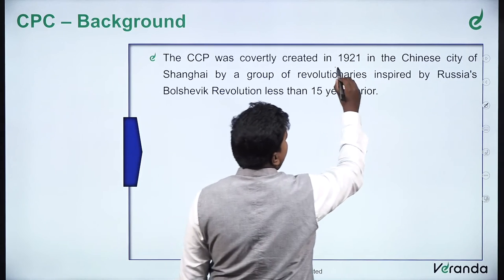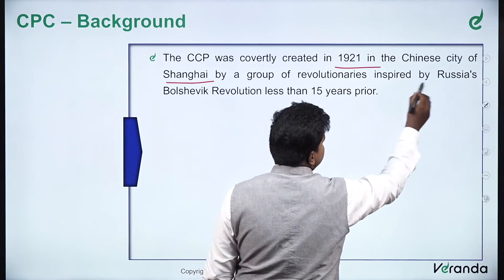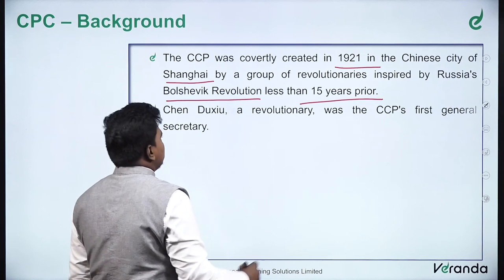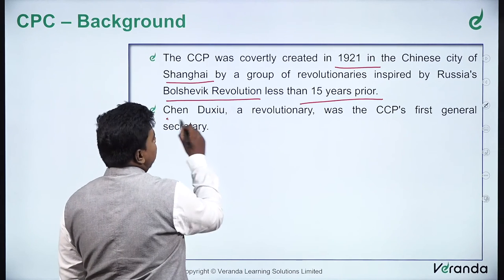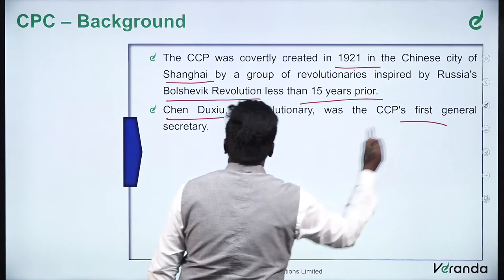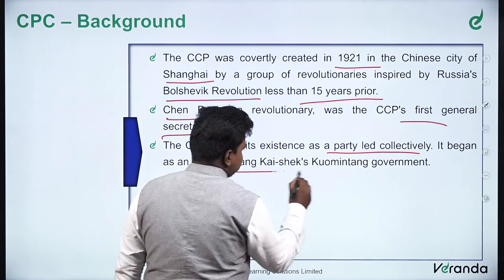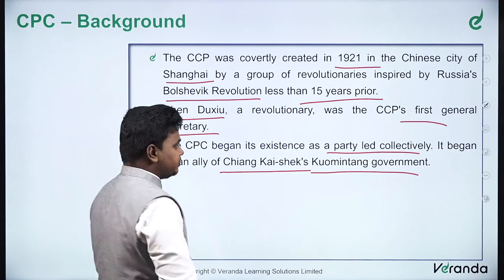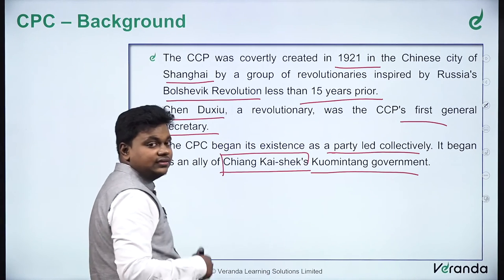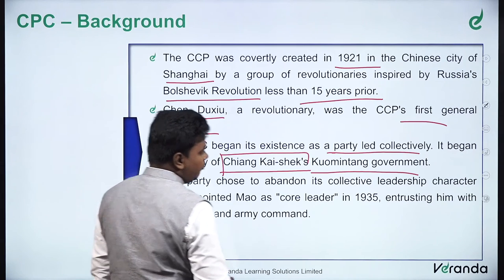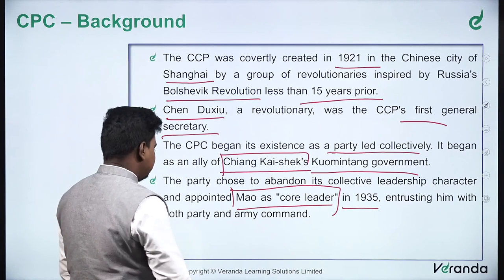The CCP was covertly created in 1921 in the Chinese city of Shanghai, by a group of revolutionaries inspired by Russia's Bolshevik revolution less than 15 years prior. Because of the victories of the Communist Party in Russia, this party got established in China. The Chinese leader Chen Duxiu, a revolutionary, was the CCP's first general secretary. The CPC began its existence as a party led collectively, and it began as an ally of Chiang Kai-shek's Kuomintang government. The party later chose to abandon its collective leadership and appointed Mao Zedong as core leader in 1935, entrusting him with both party and army command.